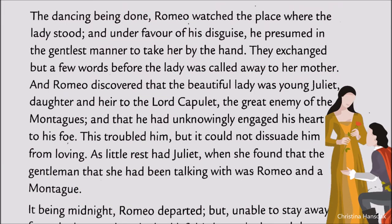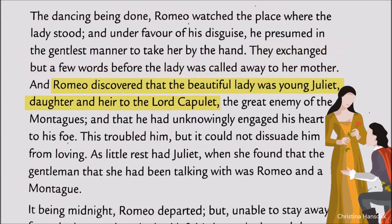The disguised Romeo took Juliet by the hand gently, and they exchanged a few words before Juliet was called away to her mother. Romeo then came to know that she was none other than Juliet, daughter and heir of old Lord Capulet — the great enemy of the Montagues. Unknowingly, he had laid his heart at Juliet's feet.